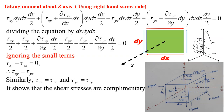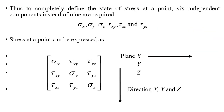Now after this, we will derive the equilibrium equations of elasticity. As discussed earlier, the state of stress at a point can be completely defined with the help of six independent components instead of nine. These are the six components: sigma x, sigma y, sigma z, tau xy, tau xz, and tau yz.